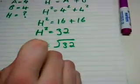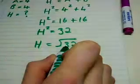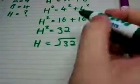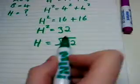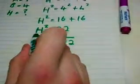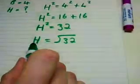H equals the square root of 32, because you have the square of H here and a normal number here. To find H on its own, not squared, you have to square root the other side of the equation to get what H is.